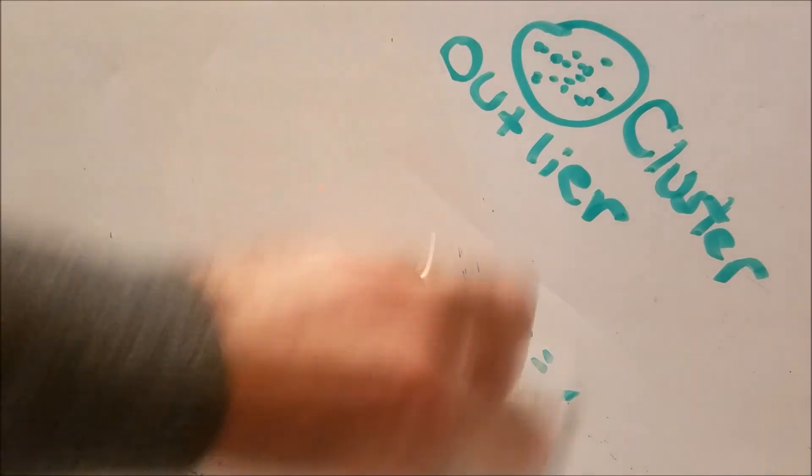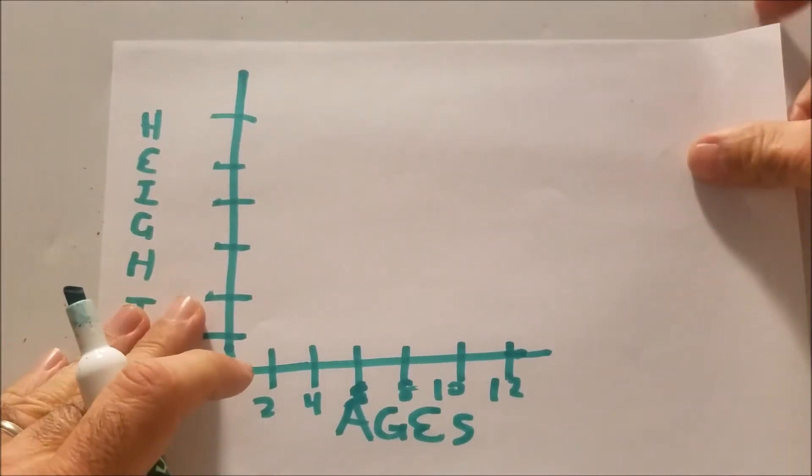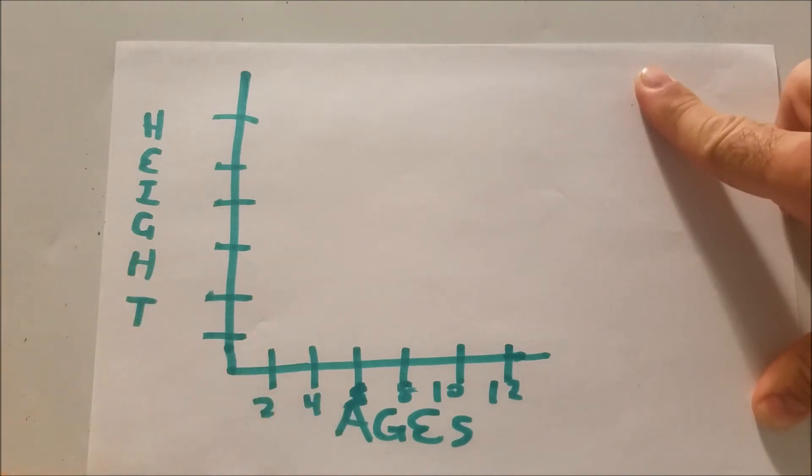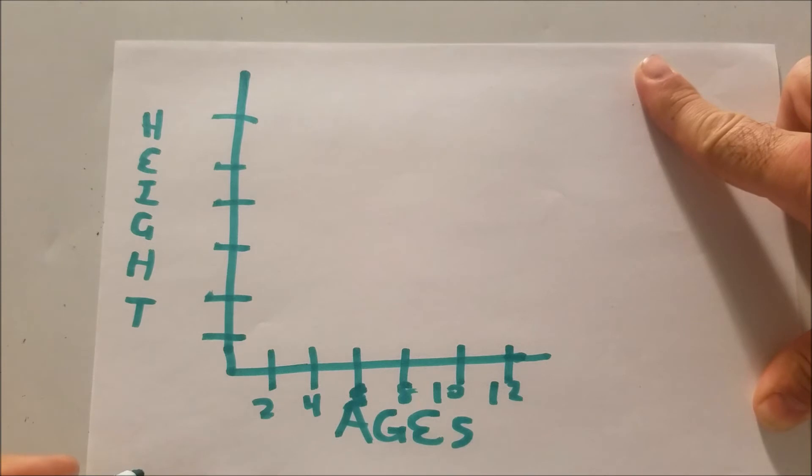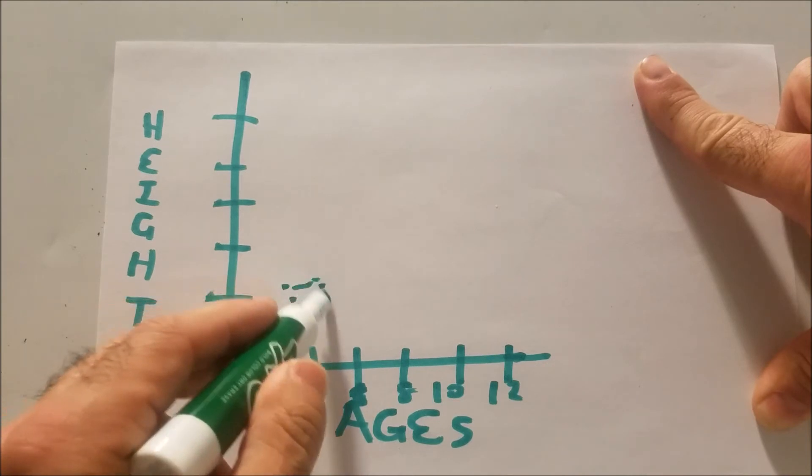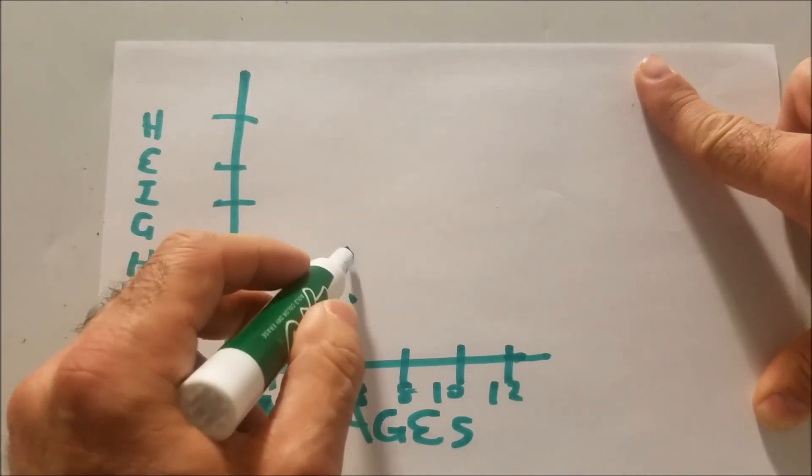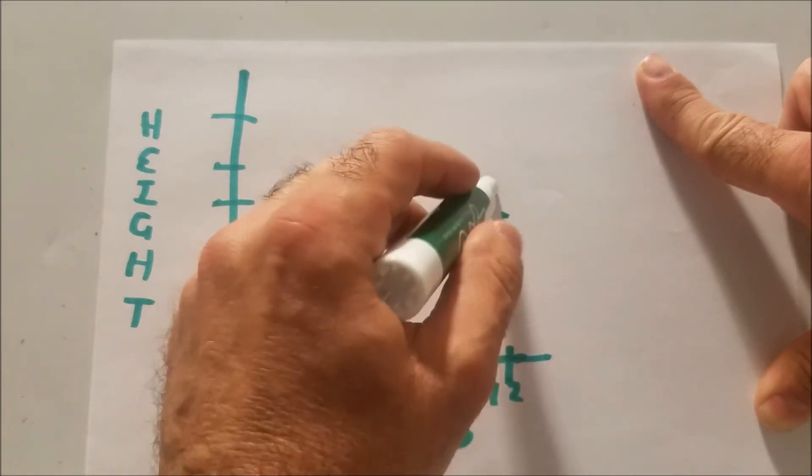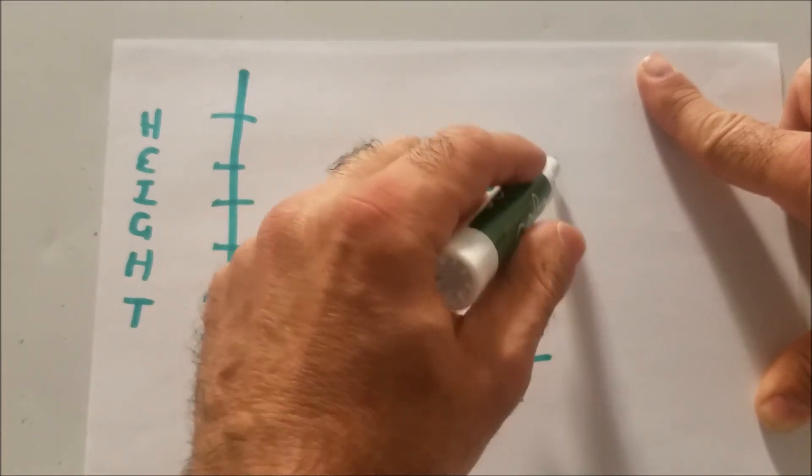So let's do an example again. So here is bivariate data, right, because we have two. We're talking about ages and height. So you would assume that the height should increase as the ages increase, right? So they looked at two-year-olds, and let's say they got this information here. Four-year-olds increased, right? So it should be slowly increasing in height. And you're getting different points, right?